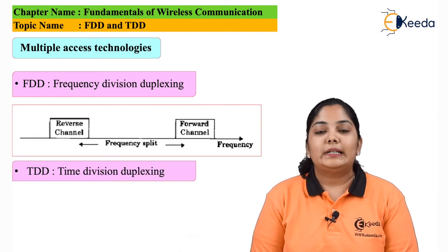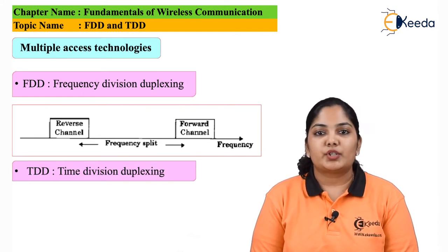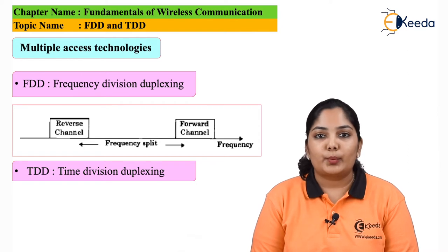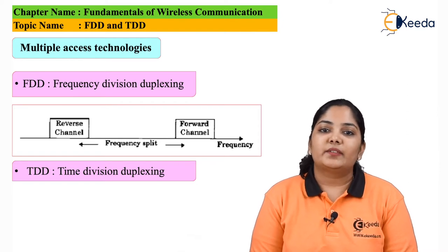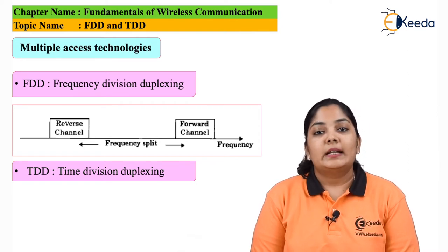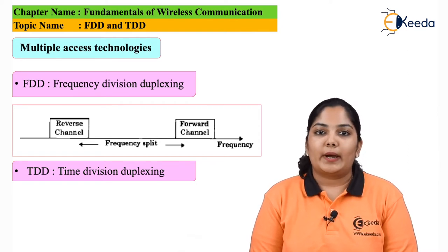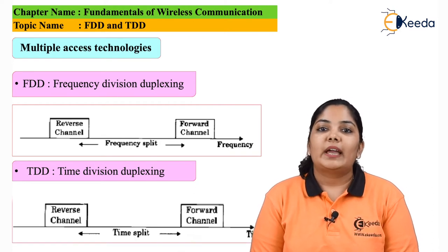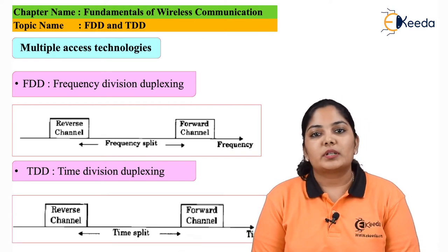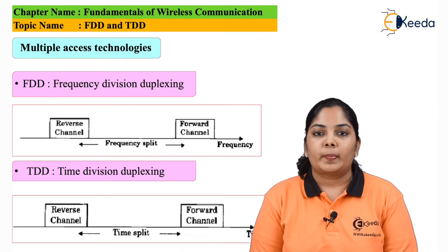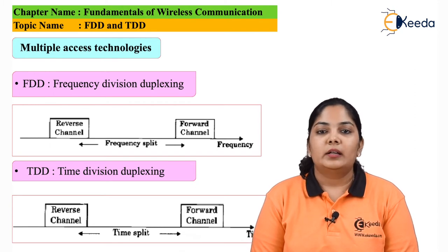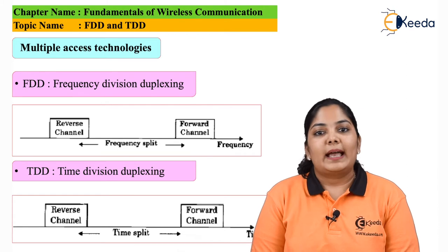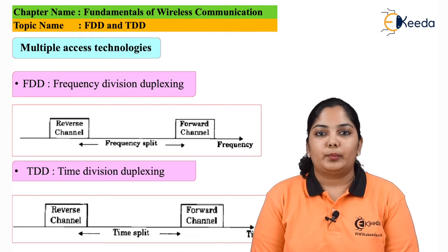Next, we move on to time division duplexing. In time division duplexing, instead of frequency, time is divided amongst the users. Here, we have a forward time slot and a reverse time slot. As we can see in the slide, the forward time slot and the reverse time slot have some gap between them.